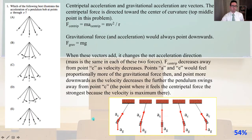Number one: which of the following best illustrates the acceleration of a pendulum bob at points A through E? The centripetal acceleration and gravitational acceleration are vectors.